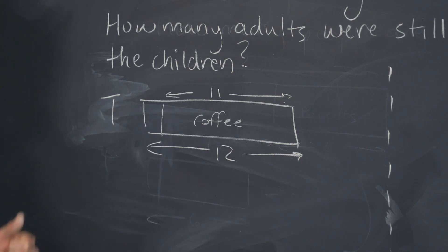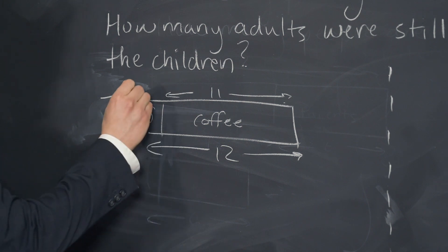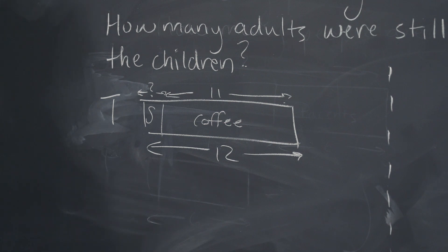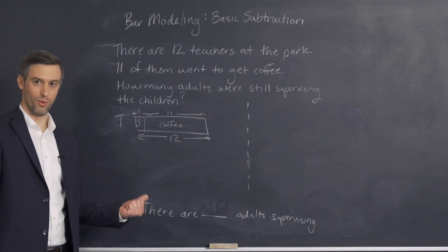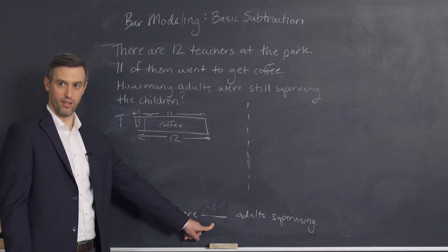How many adults were still supervising the children? So how many were supervising? We could say S for supervising and we would put our question mark. Again, our question mark only goes where the final answer would be. So you want your question mark to align with where your final answer is.